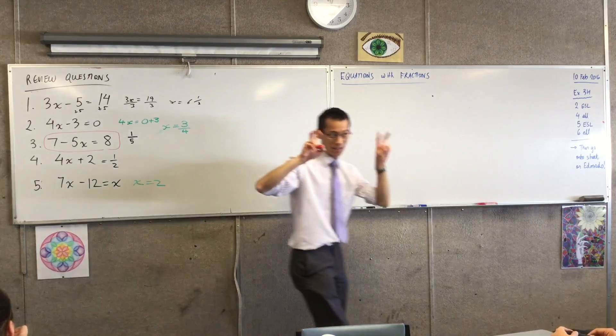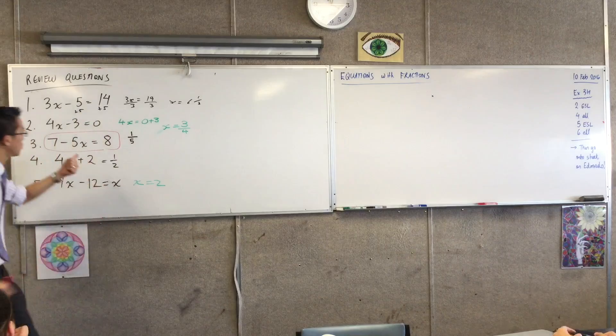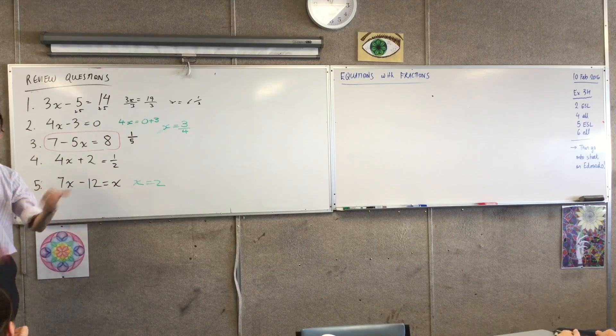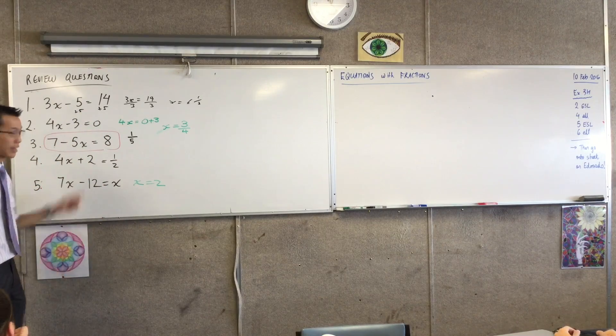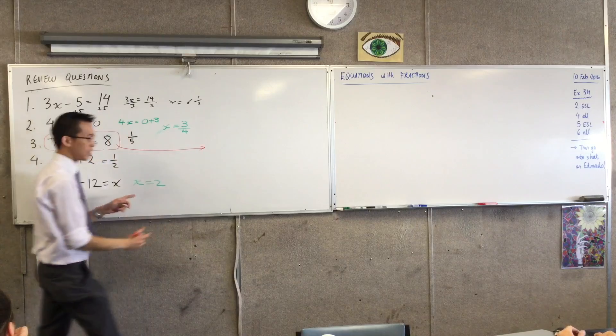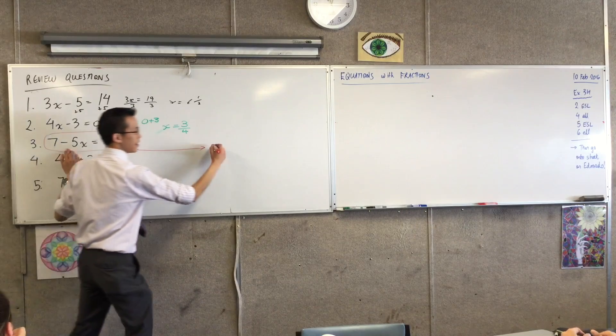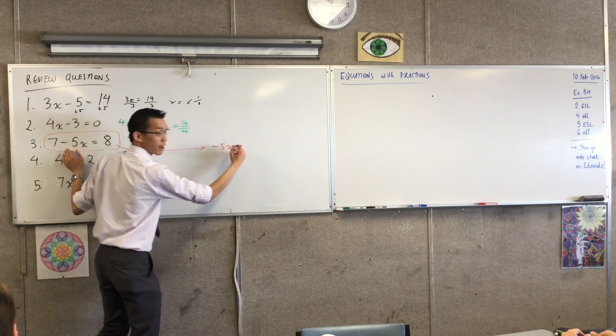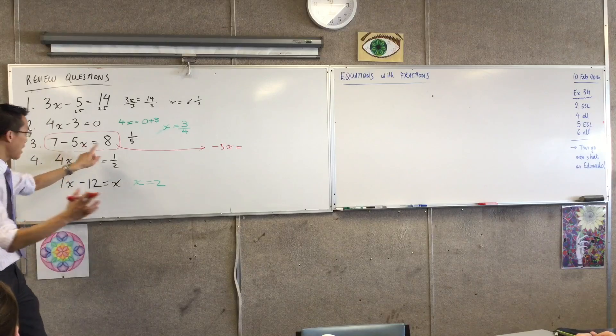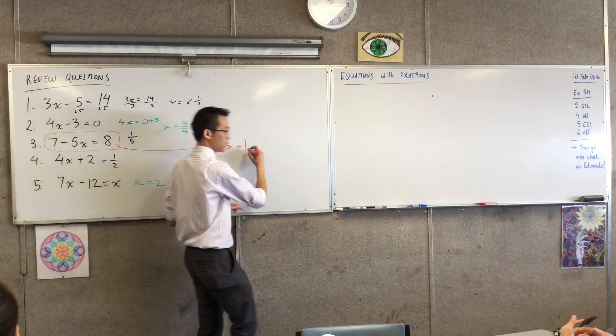So instead of saying I'm going to take the 7 to the other side, I'm going to subtract 7 from both sides and that'll get me somewhere. So just follow along with me, I'll do it over here. Over on the left, I'll get negative 5x and on the right, I'll get 8 minus 7, which is 1. So I think we're comfortable with that.